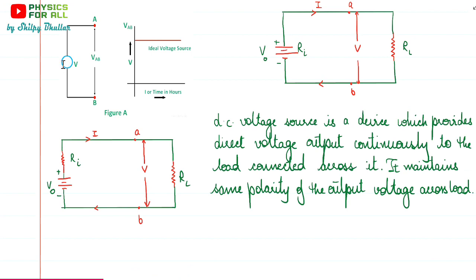In this figure, we have used this circle to represent the voltage source — that means this is an ideal voltage source. With time, you can see that you get a horizontal line, which tells us that the voltage remains constant with time. No matter how the current changes or time increases, the value of voltage is not changing. That's why we have an exact and perfect horizontal line. This is the graph for ideal voltage source.